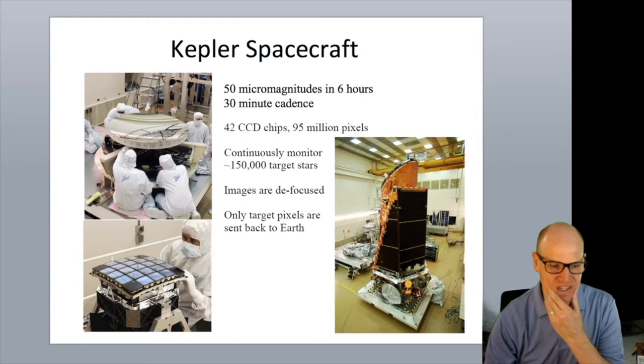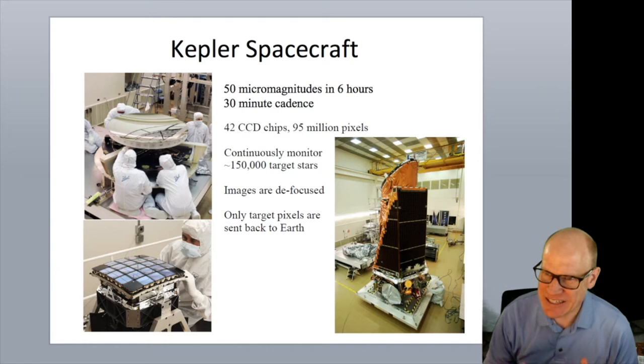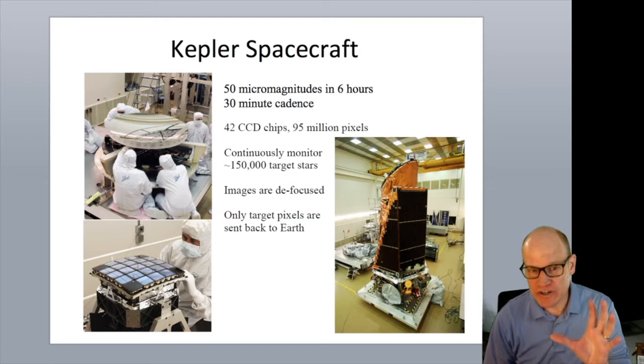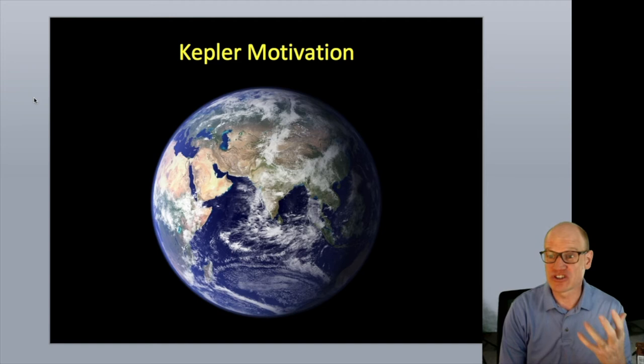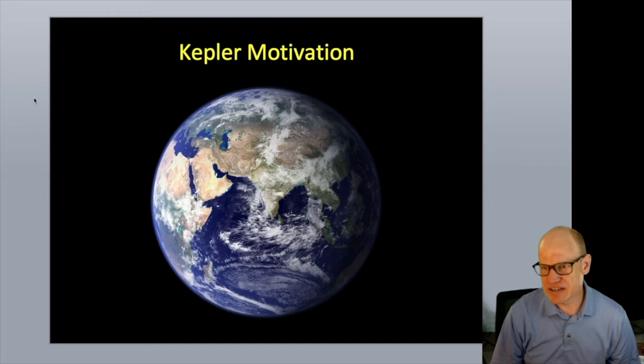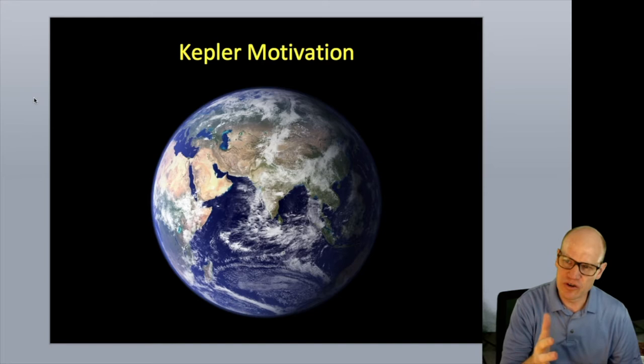The Kepler Space Telescope was designed specifically to find Earth-sized planets in one-year orbits around Sun-like stars — to measure how common Earths are orbiting other stars like the Sun. It was targeting FG and K-type stars, though towards the end they did add an ensemble of M dwarf stars.